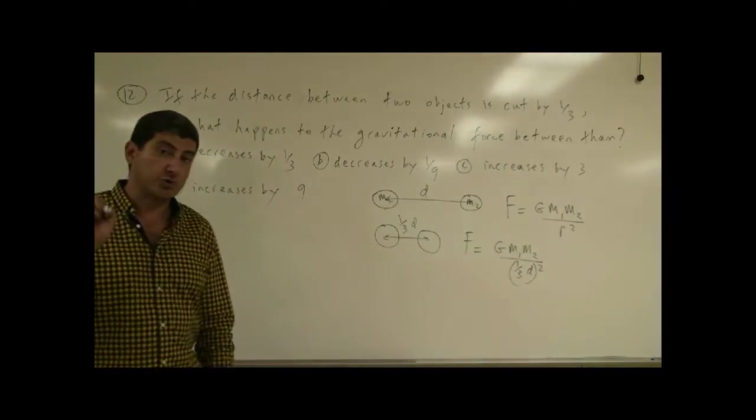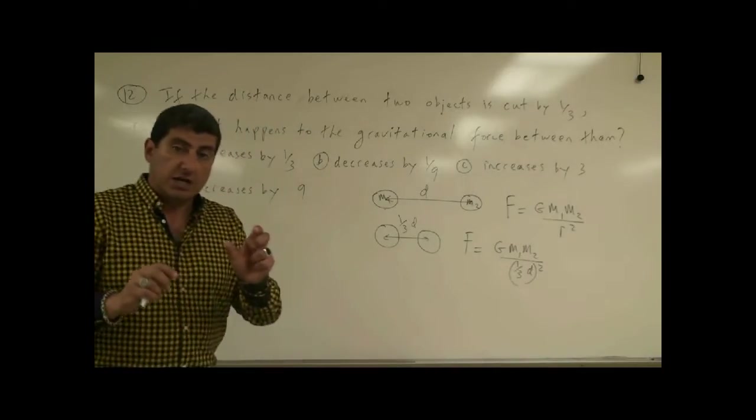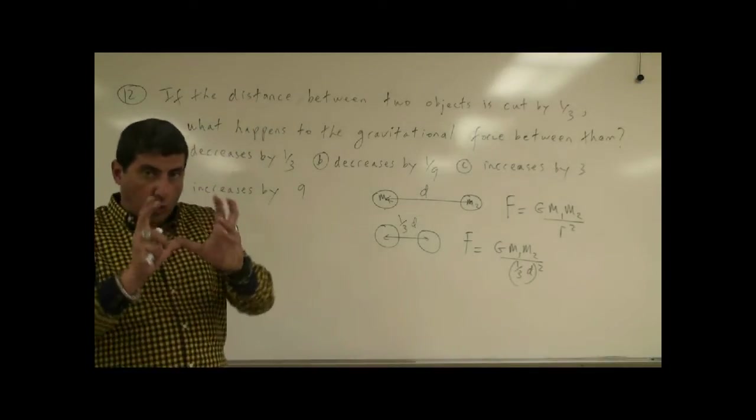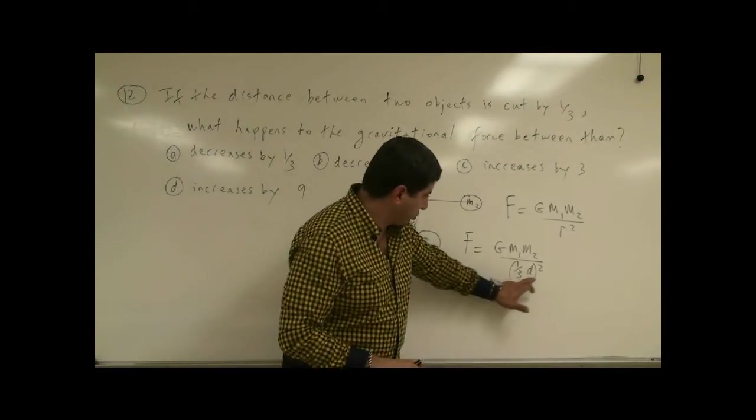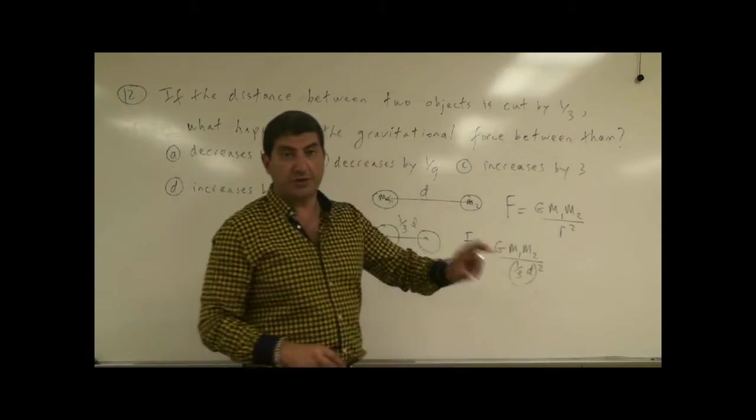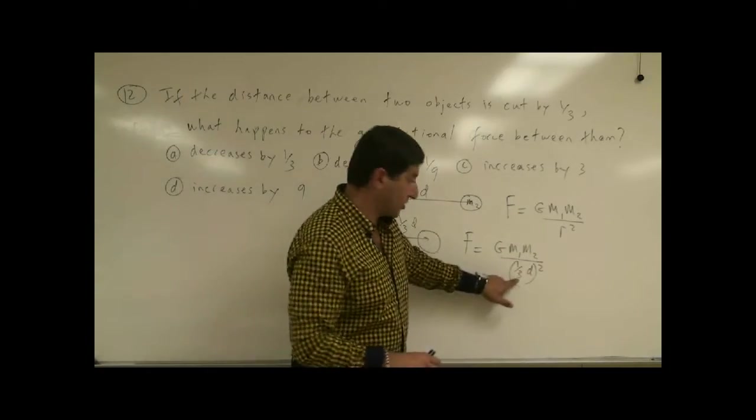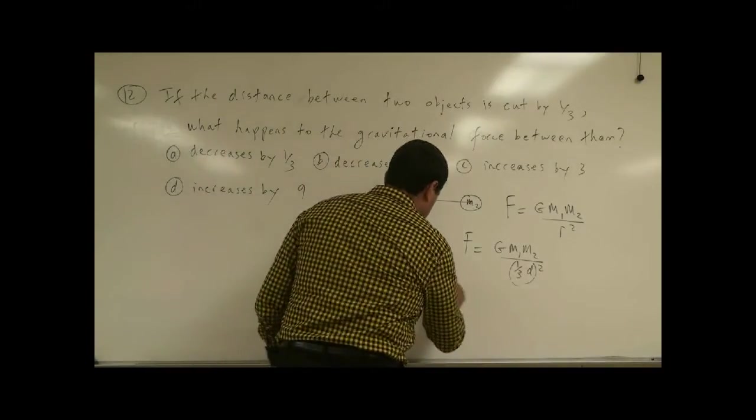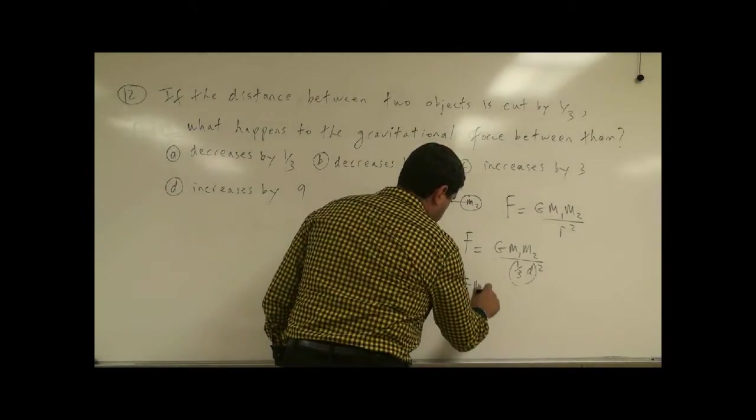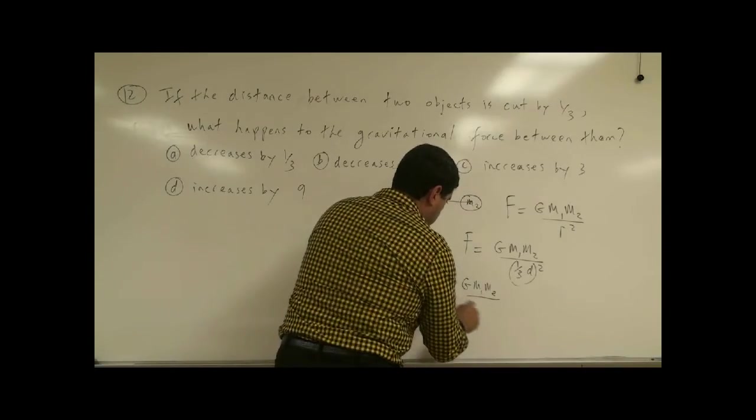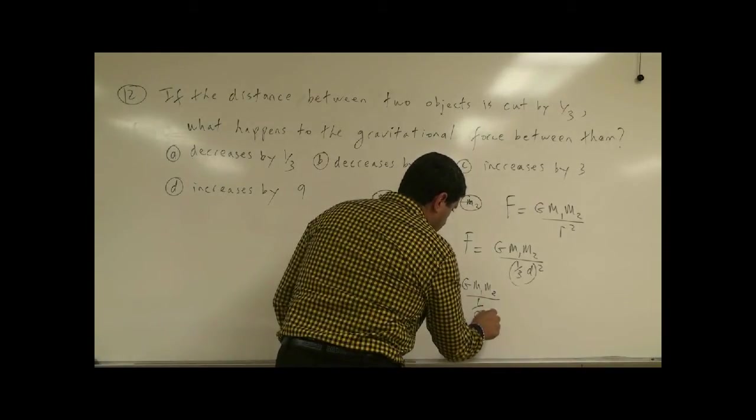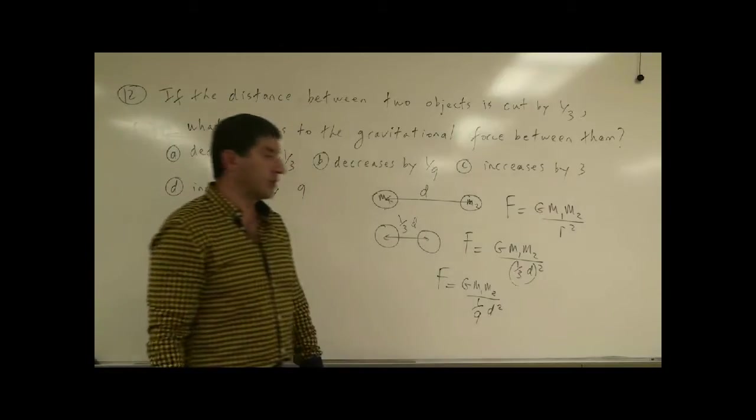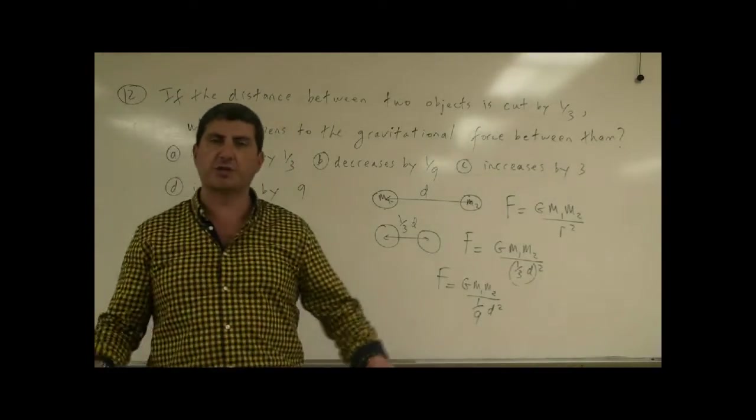So you have to make sure, the tricky thing here is, you have to square the whole thing. One-third D quantity squared. You can't just put one-third D squared. You have to also square the one-third. So what happens there, G M1 M2 over one-ninth D squared. When you square one-third, one-third times one-third is one-ninth.